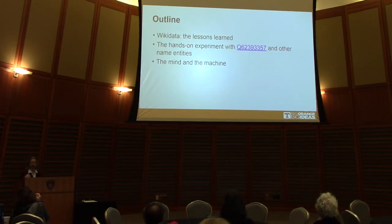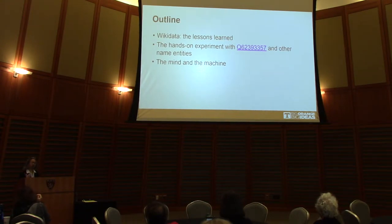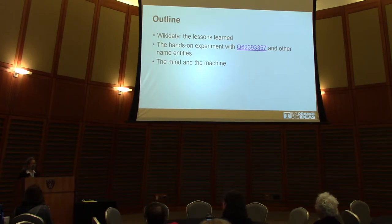Here's an overview. I'll be discussing how I learned Wikidata. I have some experiments with Q6239-3357 — that's my Wikidata ID — and other named entities. I also want to ponder what it means to have this relationship between the mind and the machine.